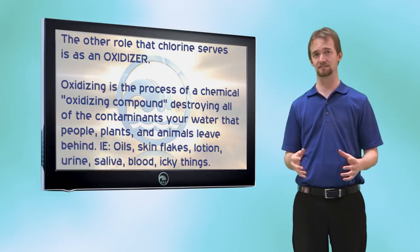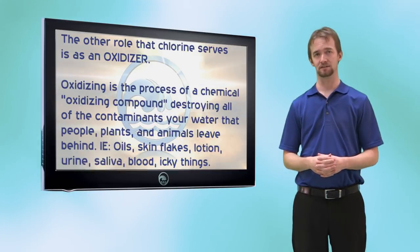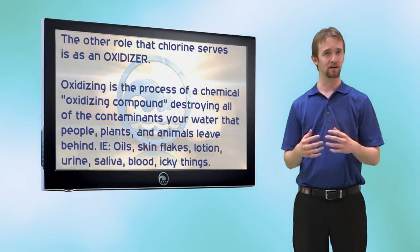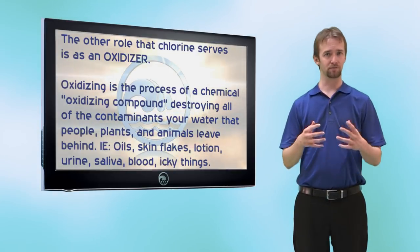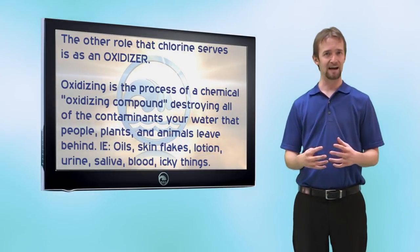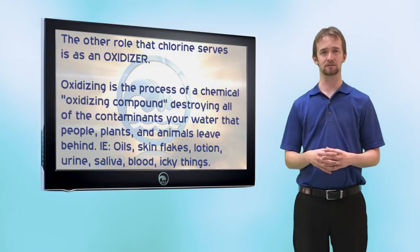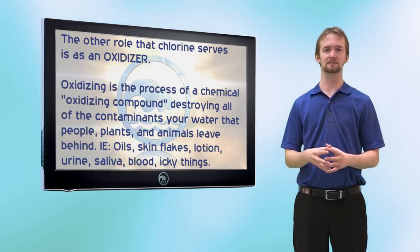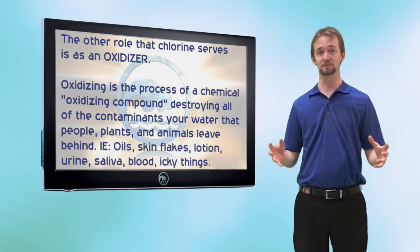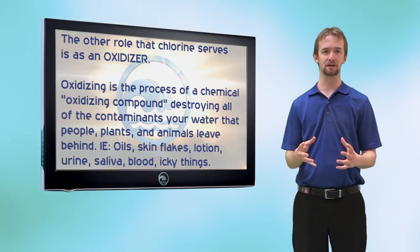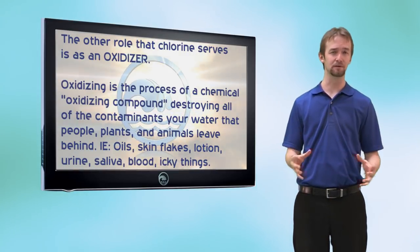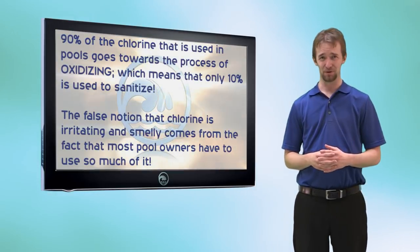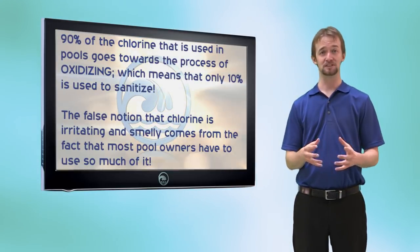The other thing chlorine does is act as an oxidizer. Your pool is constantly being bombarded with contaminants like sweat, oil, junk left over from leaves and dirt, saliva, urine, etc. Chlorine has to oxidize these things, which means it burns them out of the pool water, keeping your pool clear from cloudy contaminants that could cause a scum line.